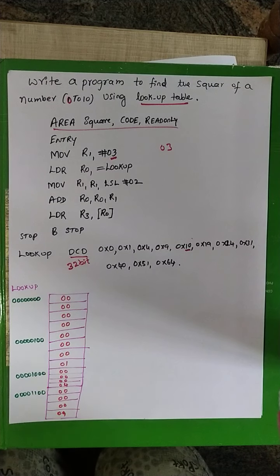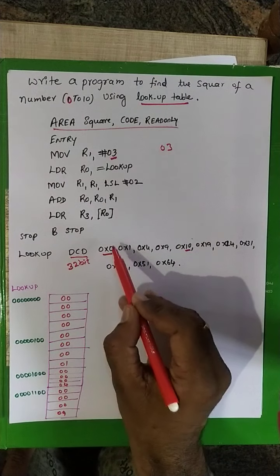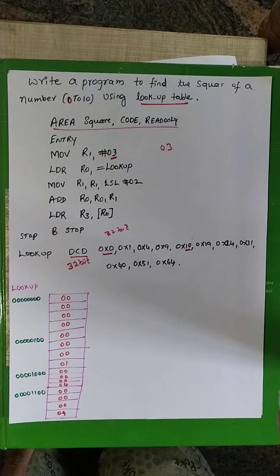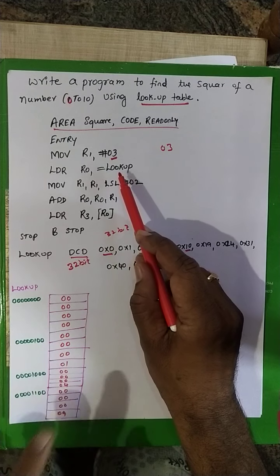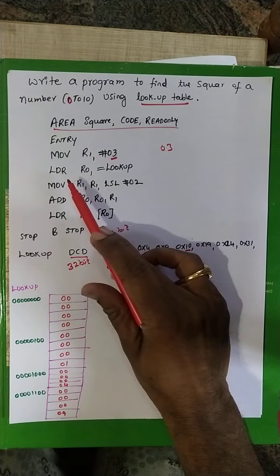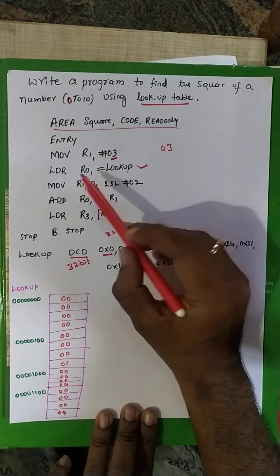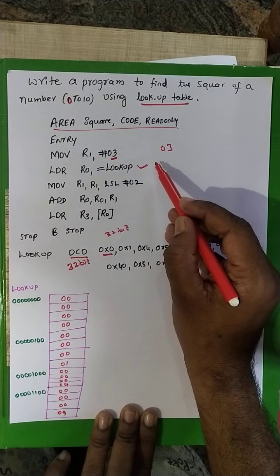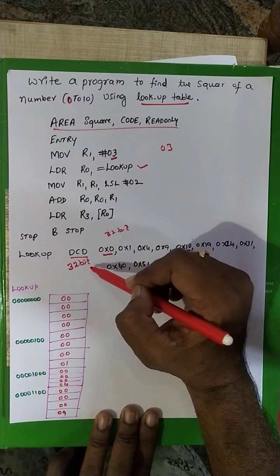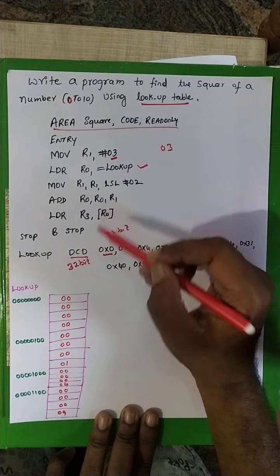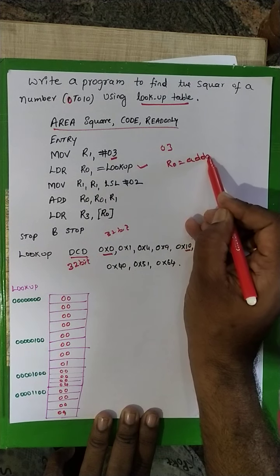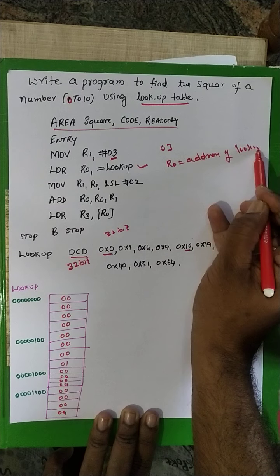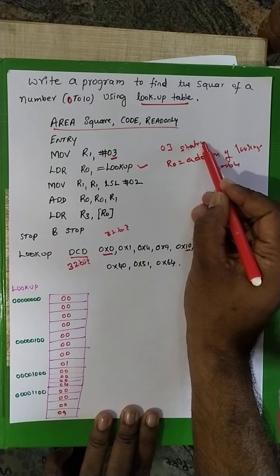These square values are stored in consecutive memory locations, each of 32-bit length. The address of the lookup table is loaded into register R0. That is, the constant value — the starting address of the lookup table — is moved into the R0 register. So R0 holds the starting address of the lookup table.